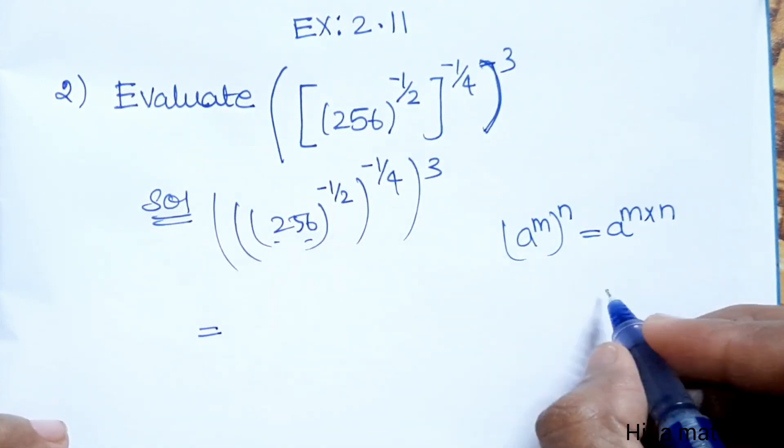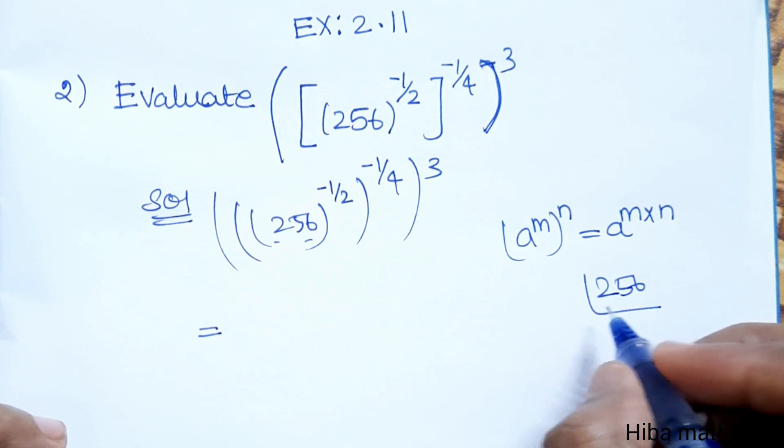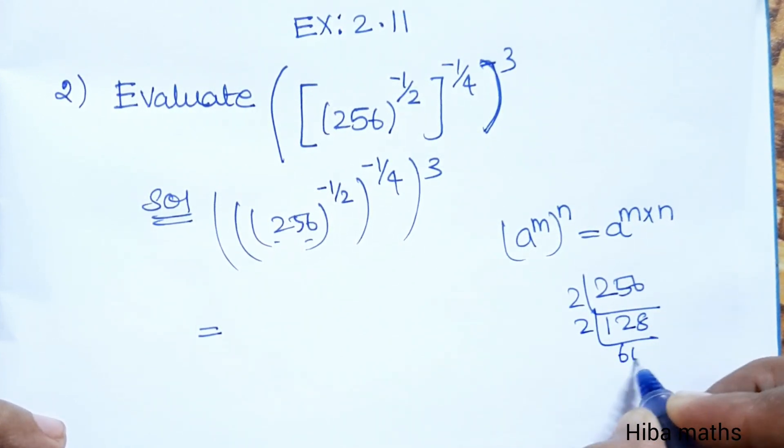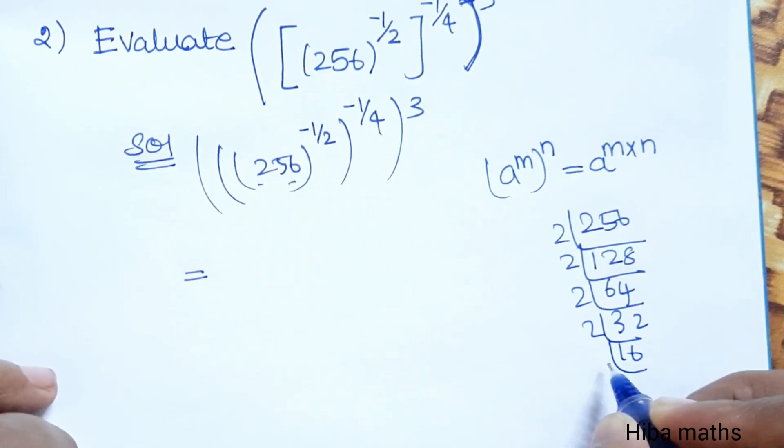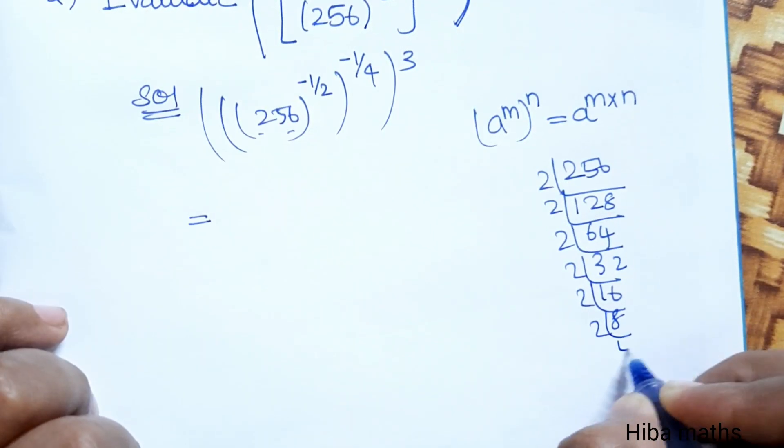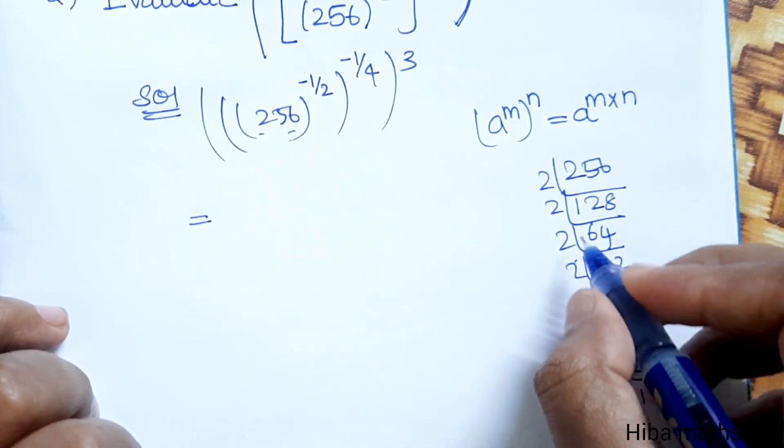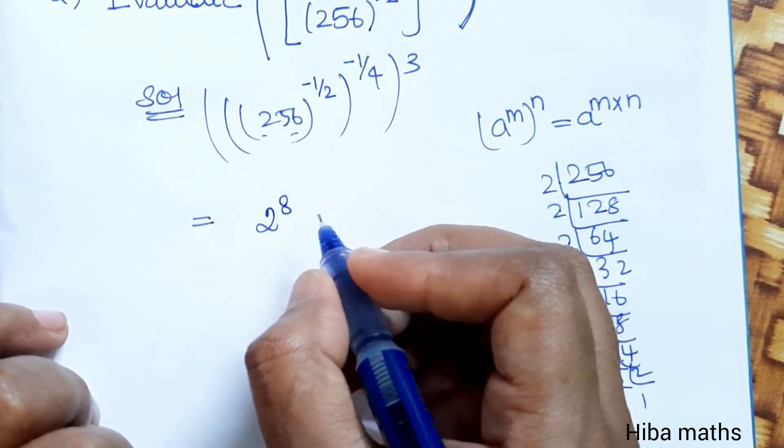First, we do prime factorization of 256: 2 times 128, 2 times 64, 2 times 32, 2 times 16, 2 times 8, 2 times 4, 2 times 2, 2 times 1. That's 1, 2, 3, 4, 5, 6, 7, 8 factors. So 256 is 2 power 8.